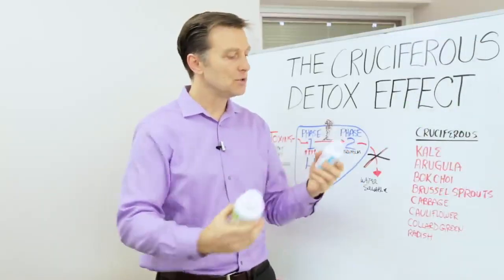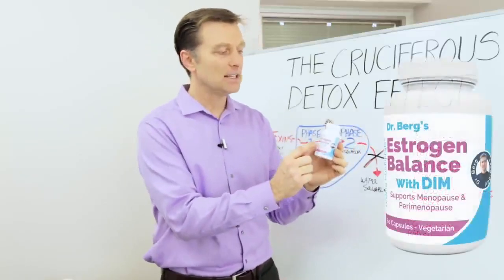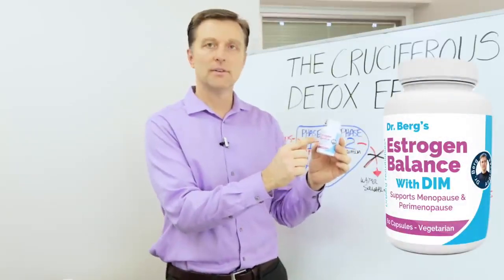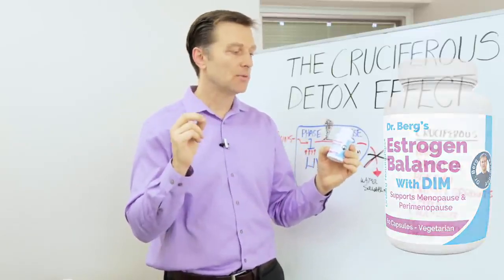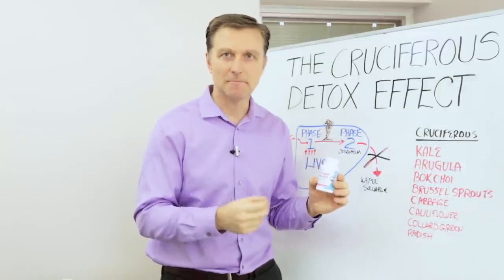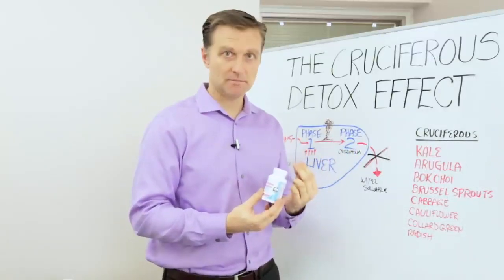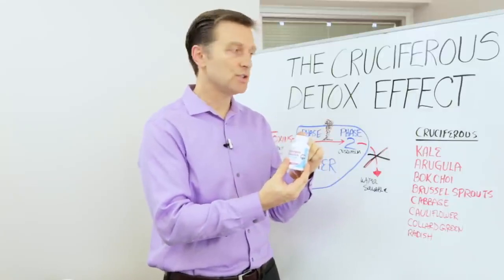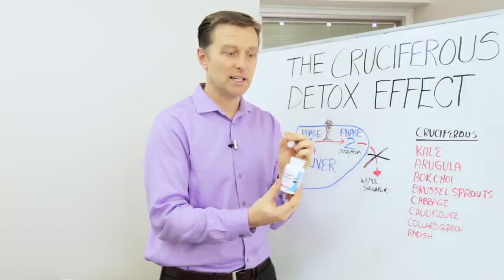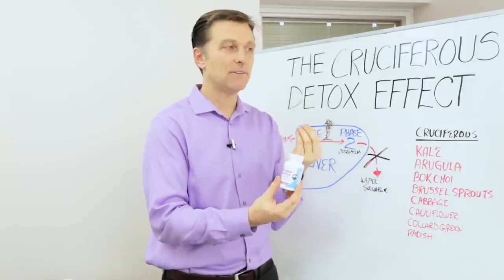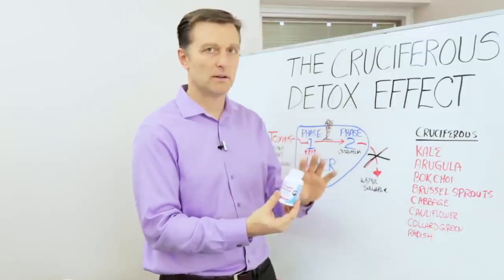And the other form is a new product that I have called estrogen balance. I like this one a little bit more if you're a female because it has an additional thing called DIM. Now, what is DIM? Well, two capsules of DIM, two capsules of this is equal to two pounds of cruciferous. So DIM is a highly concentrated cruciferous phytochemical that allows this process to happen a lot quicker.